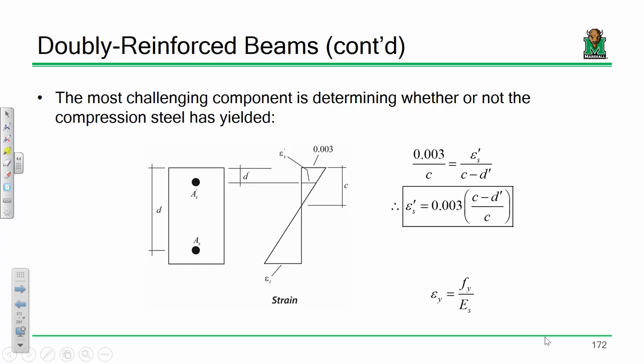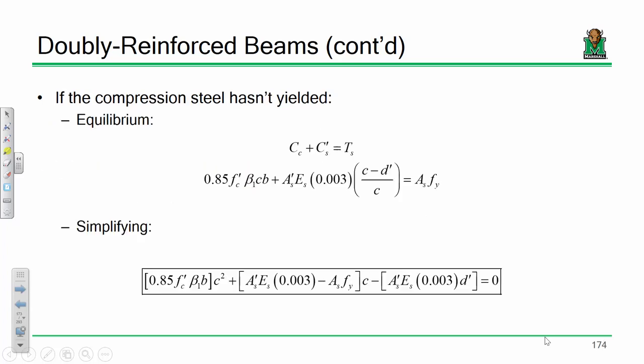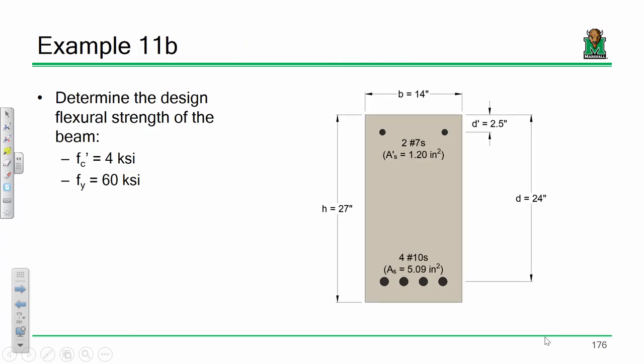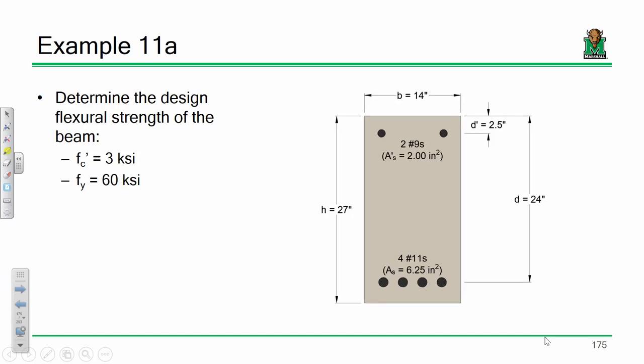And so, if it yields, I'll go ahead and tell you, if it yields, the analysis is a little easier. If it does not yield, it's a little bit more involved. So, what we'll do is we'll handle both cases and we'll have two different examples, spoiler alert, one where it yields, one where it doesn't, and we'll show you how the analysis and how the math changes if the steel does not yield because you'd be surprised how little variations can change what ends up happening.